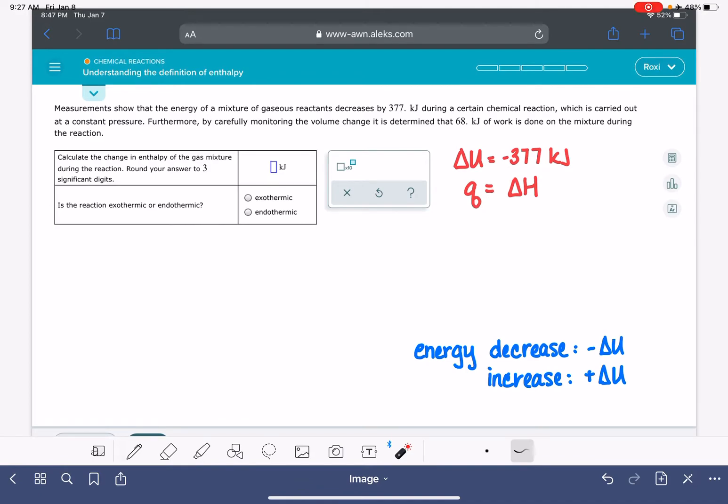And then last thing it says, 68 kilojoules of work is done on the mixture, the system. So work being done on the system means that the system is increasing in energy as a result of the work that's being done on it. Specifically, we have 68 kilojoules of work that's being done. And we can make a note of that as well.